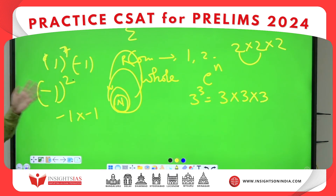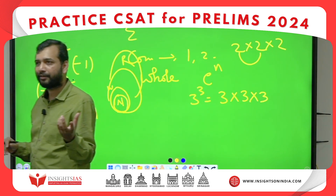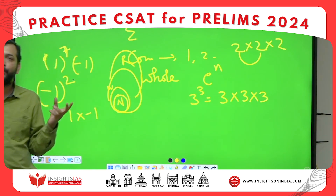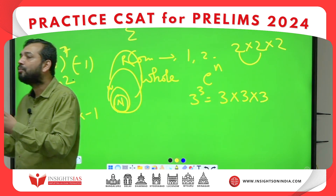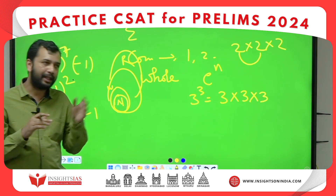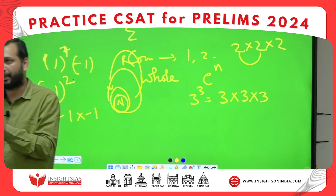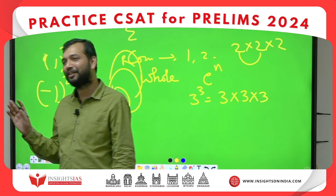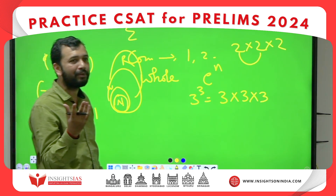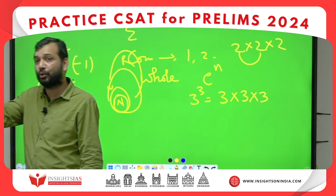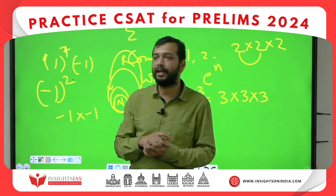We also discussed factors. A prime number will have only two factors. A composite number will have more than two factors. The number one is neither prime nor composite because it has only one factor. The least prime number is 2, which is also the only even prime number. So whenever a question about prime numbers is given, you must remember that 2 is an even prime number.